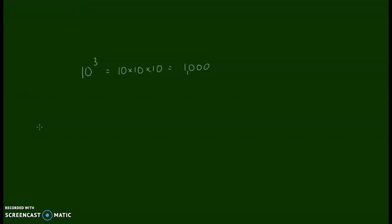In this video, we're going to be taking those powers of 10 and multiplying them by decimals. The first one I'd like to do is 3 and 4 tenths times 10 to the third power. We already talked about how 10 to the third power is the same as 1000. One thing I want you to think about when you're multiplying decimals times powers of 10 is to look at just the greatest place. Here it's the 3, which is worth 3 because it's in the ones place. So I'm going to think 3 times 1000, and I know that 3 times 1000 is 3000.